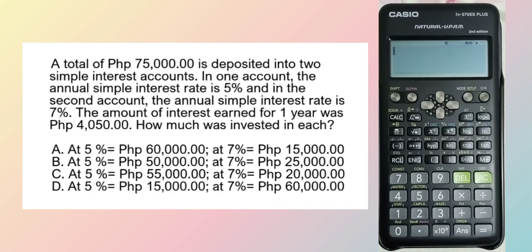A total of 75,000 pesos is deposited into two simple interest accounts. In one account, the annual simple interest rate is 5%, and in the second account, the annual simple interest rate is 7%. The amount of interest earned for one year was 4,050.